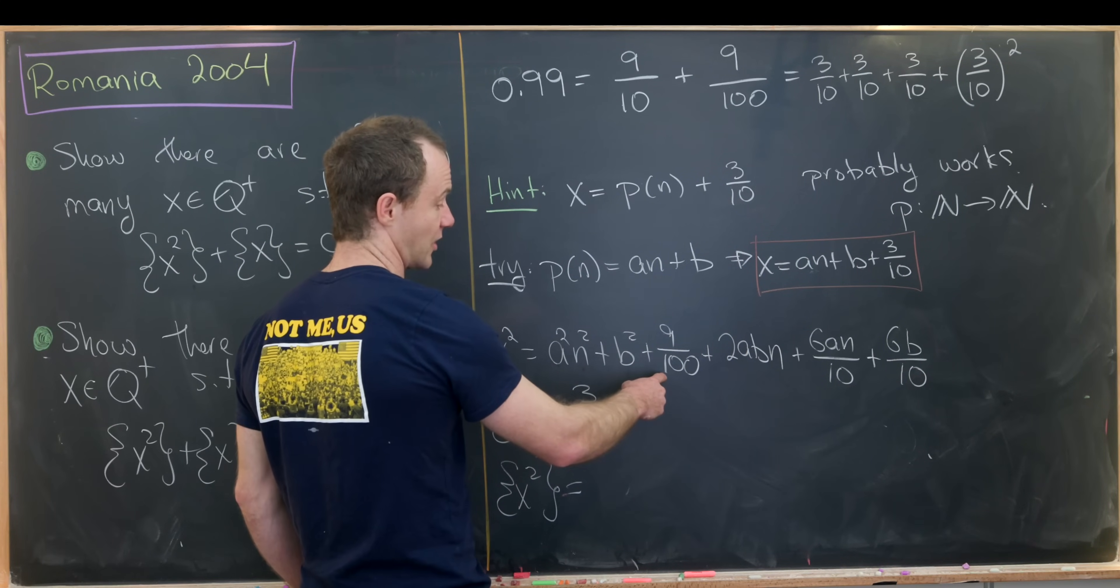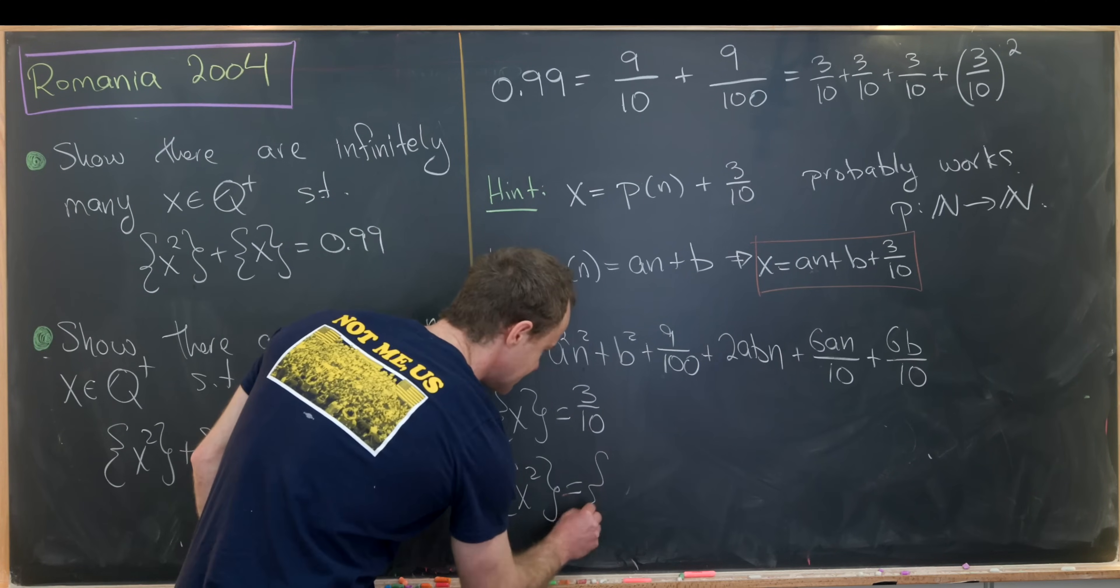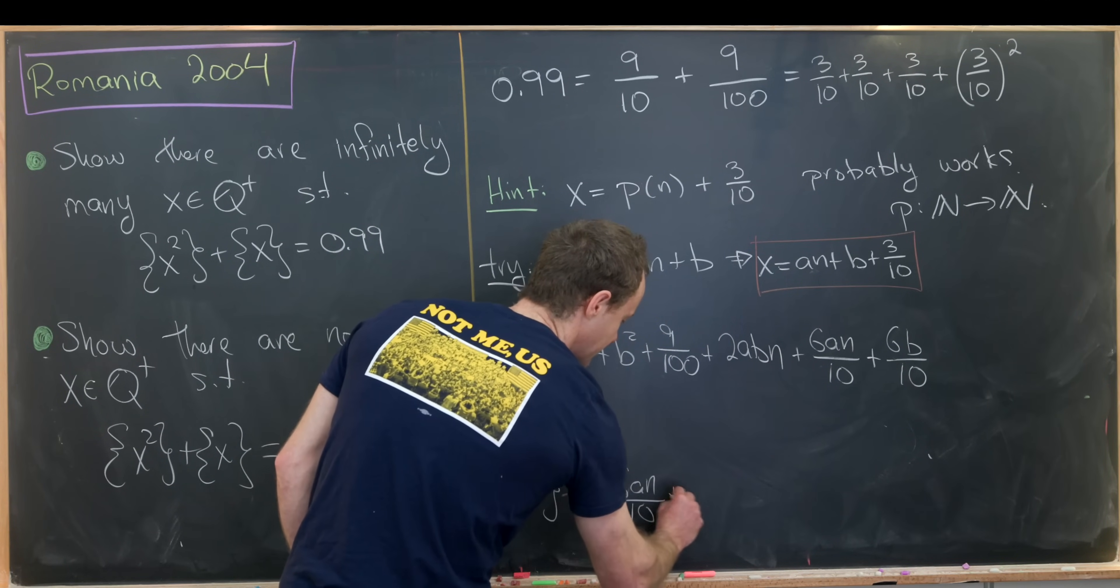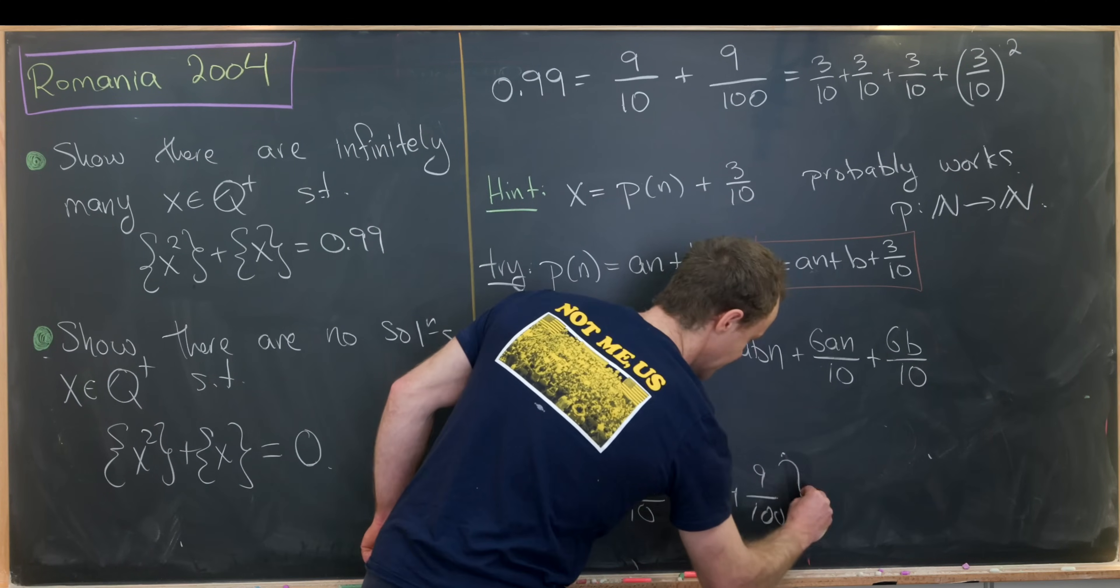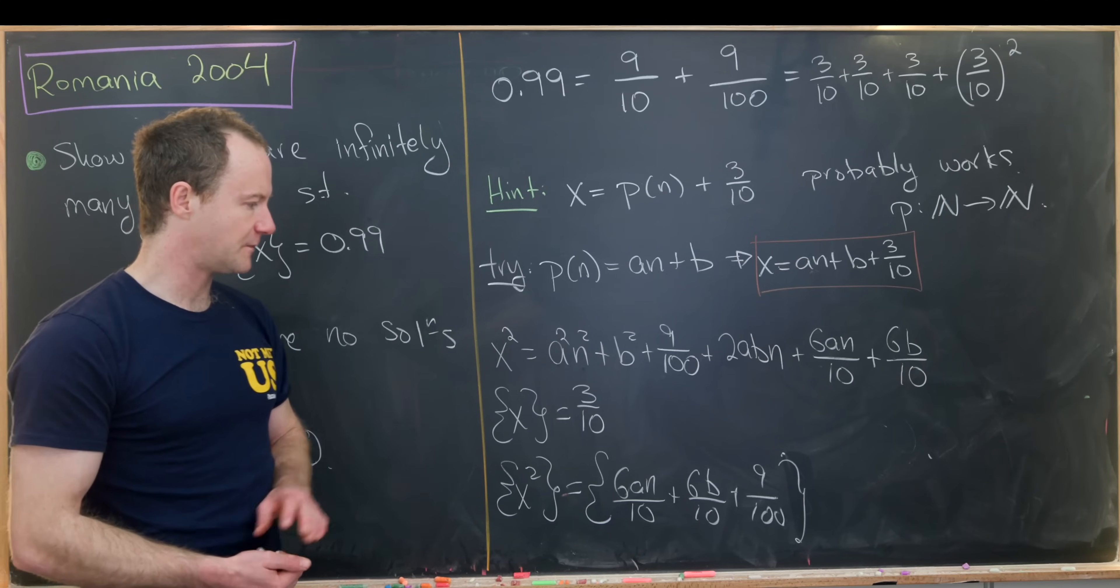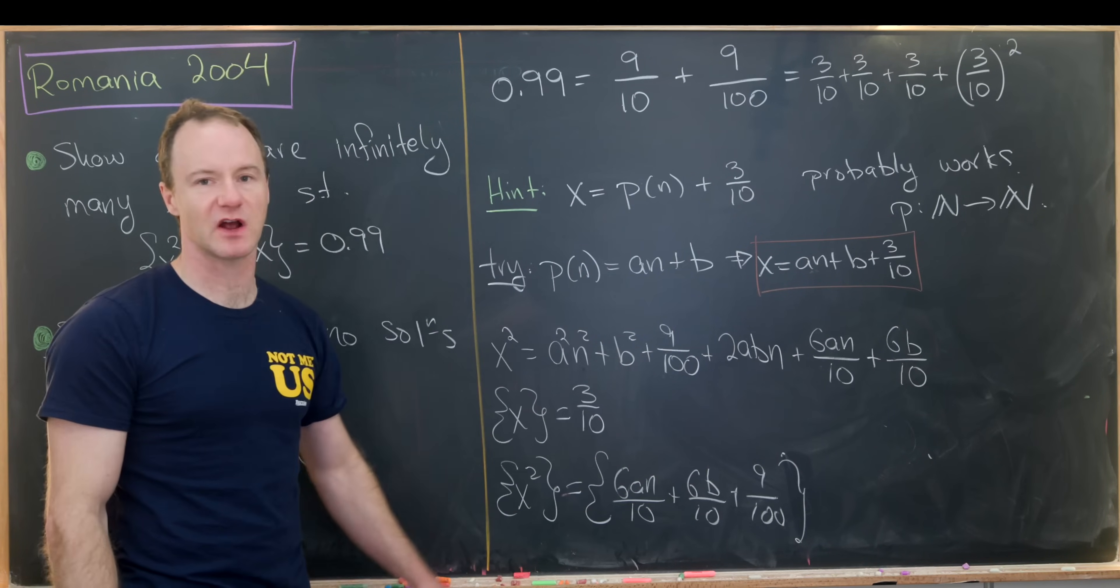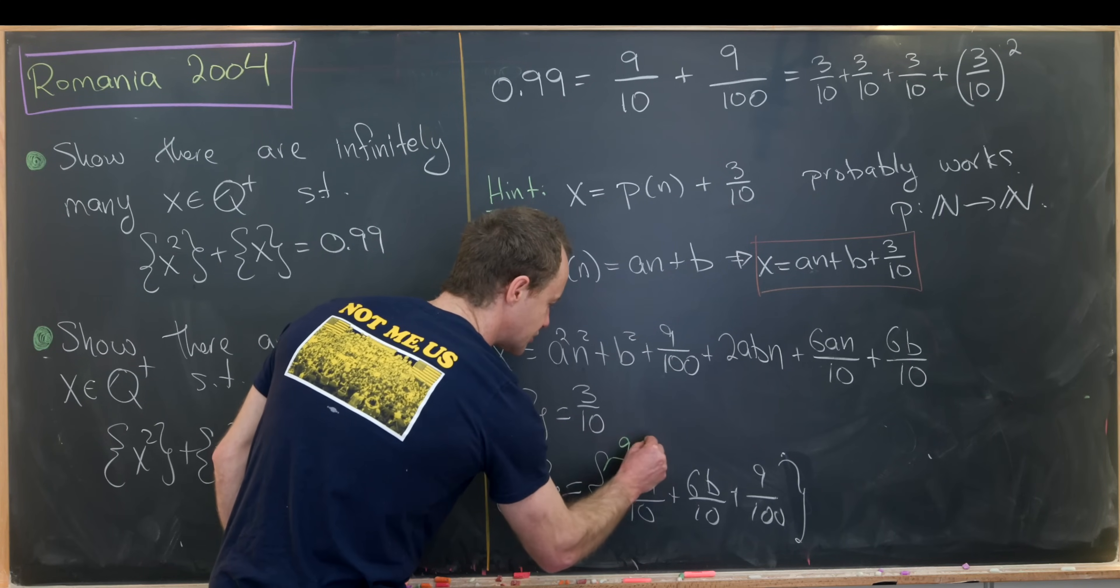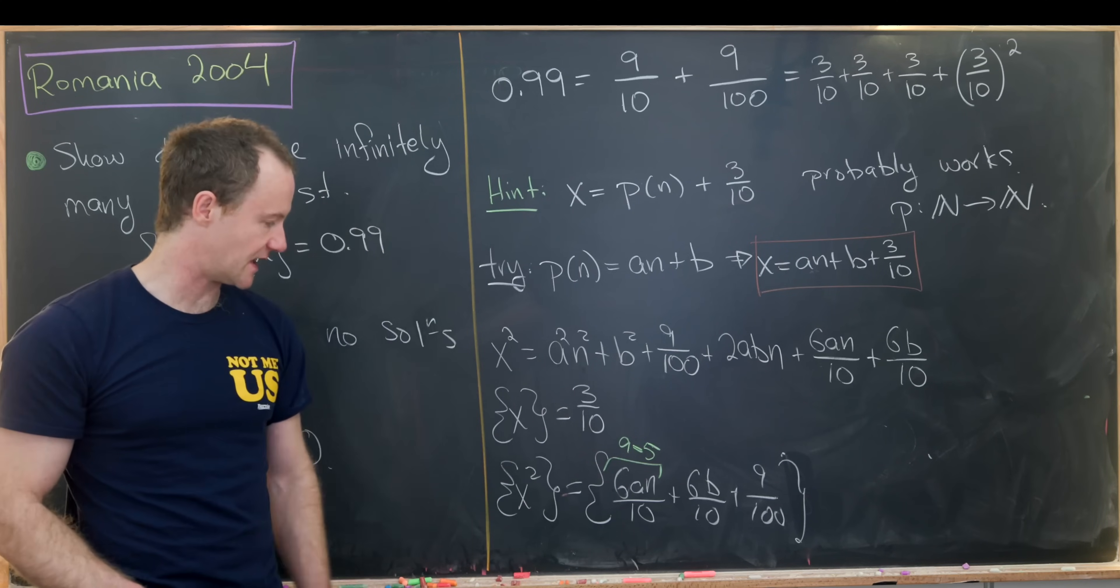So we're left with this 9 over 100 and then this stuff which may or may not be a natural number. So we'll put it inside the fractional part. This will be 6an over 10 plus 6b over 10 plus 9 over 100. We've got the fractional part of this object. Now let's start playing with the values a and b to make this work. Notice if we can somehow get rid of this guy right here, then we're just left with these guys which are most definitely fractions, especially if we choose b carefully. And we can get rid of this guy if we set a equal to 5. If we set a equal to 5, we get 6 times 5 which is 30 over 10. So that's a whole number that'll get outside of the fractional part.